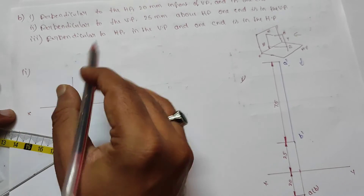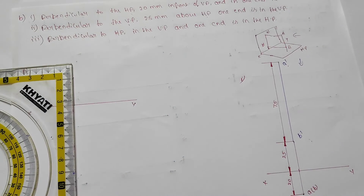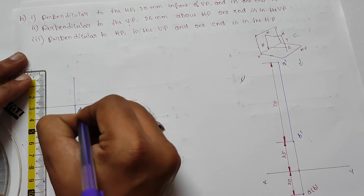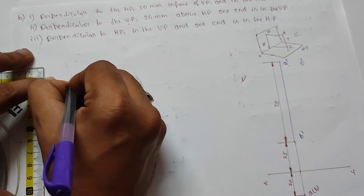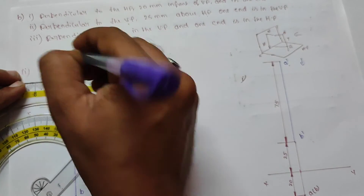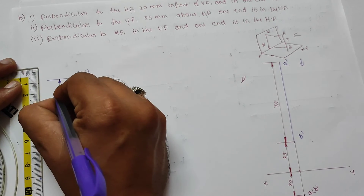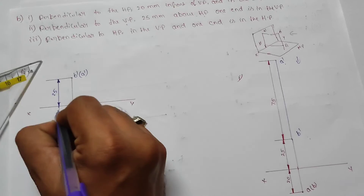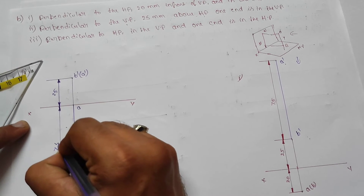Problem number two is perpendicular to VP, 25mm above HP, one end is in the VP. So for problem two, XY is in the VP, one end is in the VP, and there is no gap — so it's a direct 75mm line. Only gap is 25. There is no gap. The vertical line is actual. That's it.